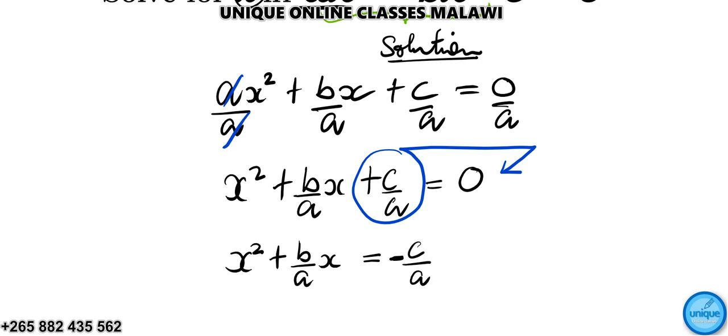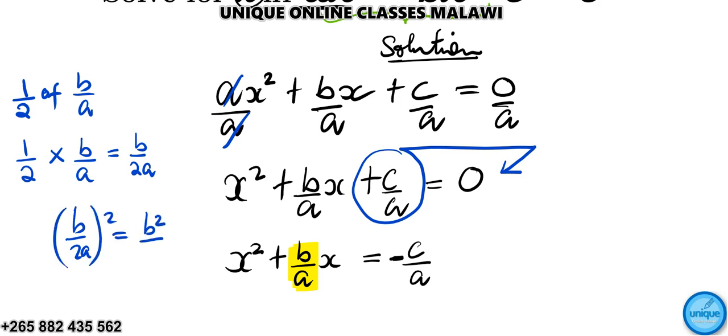So we're going to add half the square of the coefficient of the second term, both sides. So we need to find the half of b over a. That's our coefficient of x. So half of that one is equal to half of b over a. So if you multiply the numerators, it will give us b, and the denominators, it will give us 2a. That's the half. And this one, we square. So after squaring it, it will be b squared over 4a squared.